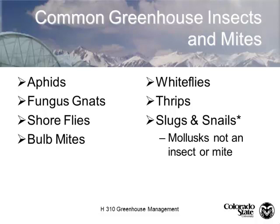Some common insects and pests that we see in the greenhouse include aphids, fungus gnats, shore flies, bulb mites, spider mites, whiteflies, thrips, slugs, and snails. Slugs and snails are not insects or mites, but we deal with them as well.